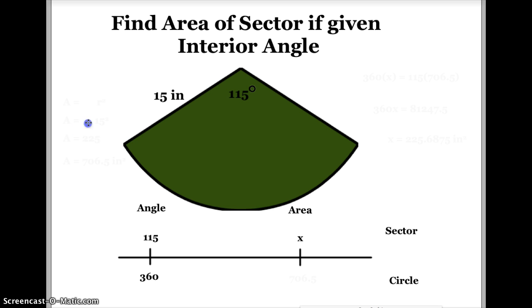I'm going to do that by using the area formula. Area is equal to πr². And since the radius in this problem is 15, it's going to be π times 15 squared. 15 times 15 is 225. So my area is equal to 225π.